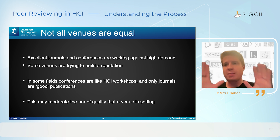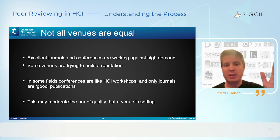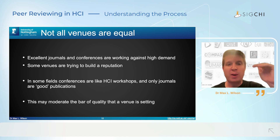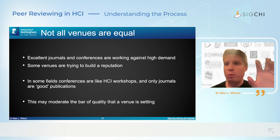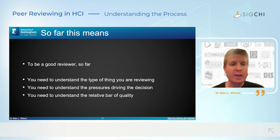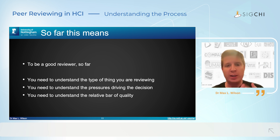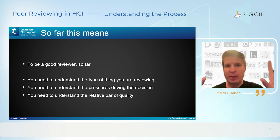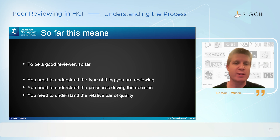So that's complicated — there's a big mix of types of papers, time pressures, and levels of quality bar that venues are aiming for. As a reviewer, you want to understand what you're currently doing and where you're providing a review. To be a good reviewer, you have to understand the type of thing you're reviewing, the pressures driving the decision, and the relative bar of quality for that particular venue. First thing to check: think about that in your head before you start writing a review.